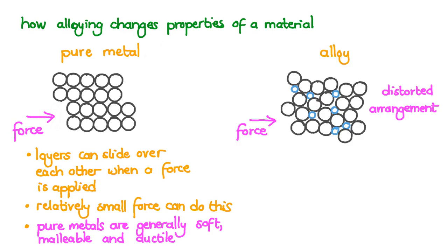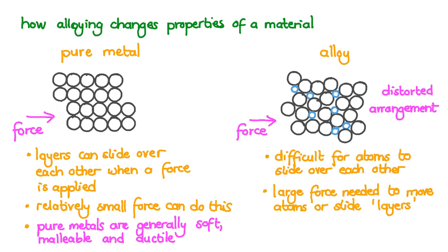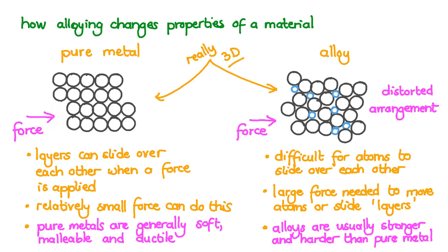However, when a different element is mixed or alloyed into the structure, there are usually atoms of different sizes. The arrangement of atoms becomes distorted. It is more difficult for atoms to slide over each other and a much larger force is needed to move these atoms or slide layers. This is why alloys are usually stronger and harder than the pure metal. Though these diagrams are drawn in two dimensions, remember that in reality the atoms are arranged in three dimensions.